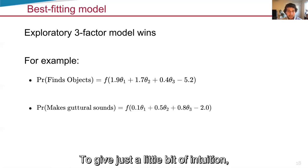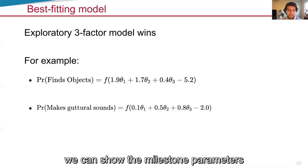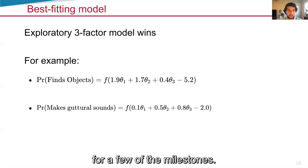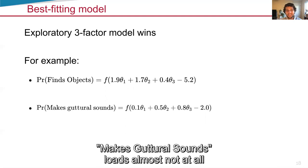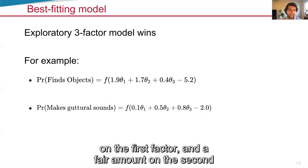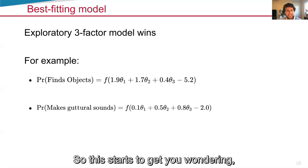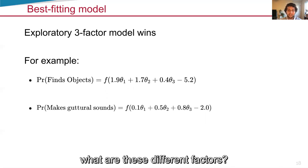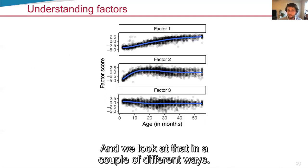To give just a little bit of intuition, we can show the milestone parameters for a few of the milestones. Find objects loads most on the first and the second factor, not very much on the third factor. Makes guttural sounds loads almost not at all on the first factor, and a fair amount on the second and the third factor. So this starts to get you wondering, what are these different factors? And we look at that in a couple of different ways.